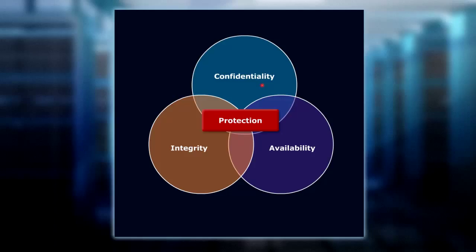Confidentiality is about concealing information from those who shouldn't be reading it. An example of what provides confidentiality is encryption. Encryption hides the data — the readability of data — as it is transported across a network. Then we have availability.